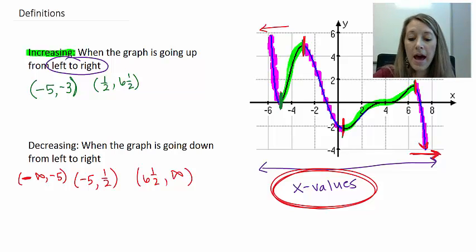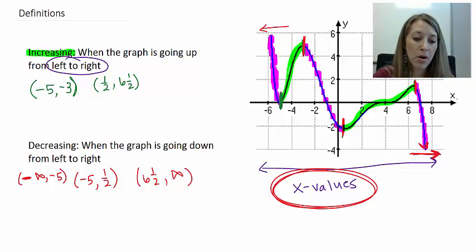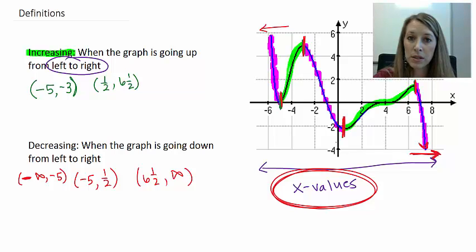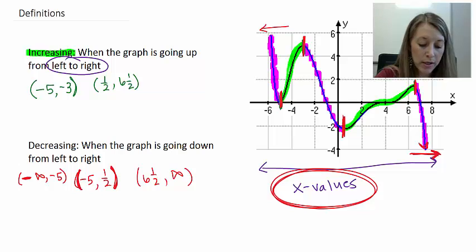To recap: visualizing where a graph is increasing and decreasing is pretty easy, but picking out the intervals is a little more complicated. Just remember, it's only dealing with x-values — left and right. Also remember that these are always open parentheses, because we never include the specific endpoints of whether it's increasing or decreasing, since a point cannot be both at the same time. The endpoint is just the transition point between intervals.